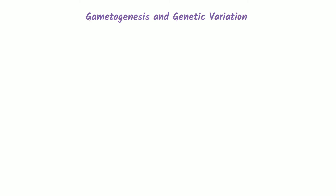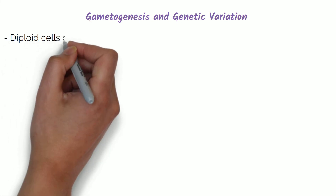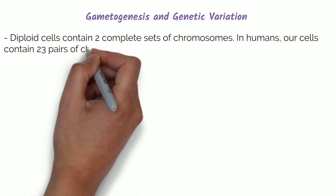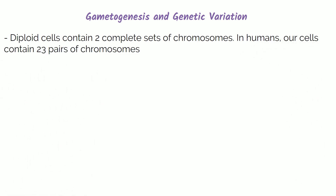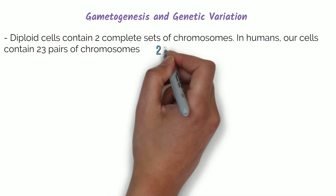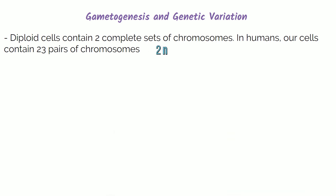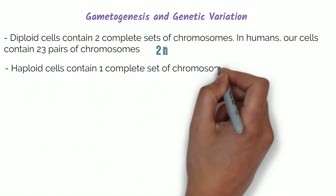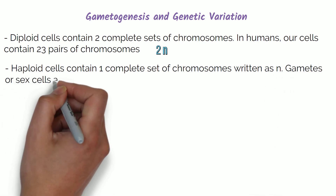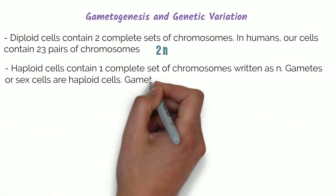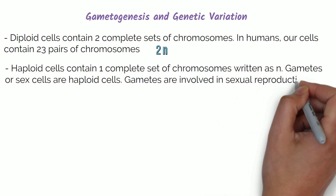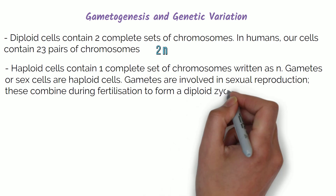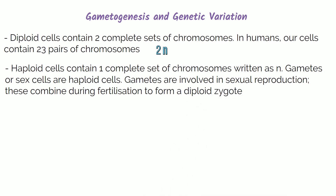Gametogenesis and genetic variation. Diploid cells contain two complete sets of chromosomes — in humans, our cells contain 23 pairs of chromosomes. Diploids are written as 2N. Haploid cells contain one complete set of chromosomes, written as N. Gametes, or sex cells, are haploid cells involved in sexual reproduction. These combine during fertilisation to form a diploid zygote (2N).